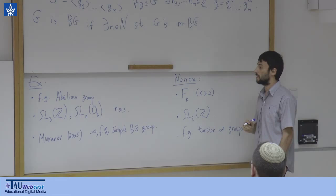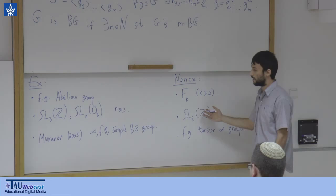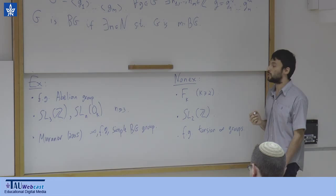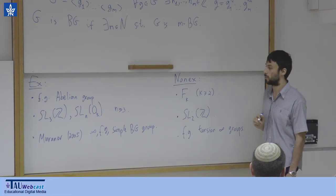Most of the interest in bounded generation came from linear groups, because this property is related to the congruence subgroup property and to Kazhdan's property T. I will not elaborate on that so much.